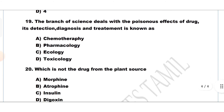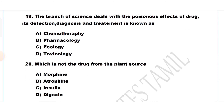Question number 19. The branch of science that deals with the poisonous effect of drugs, its detection, diagnosis and treatment is known as: Option A: Chemotherapy, Option B: Pharmacology, Option C: Ecology, Option D: Toxicology. Simple question — the answer is Option D, toxicology.